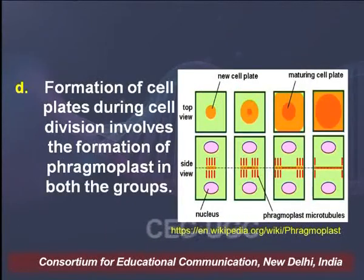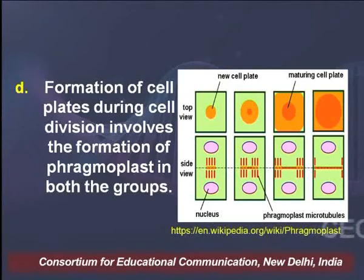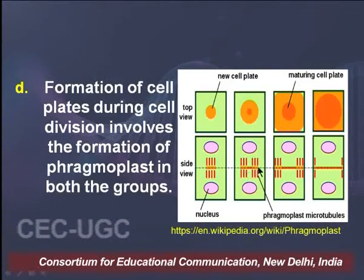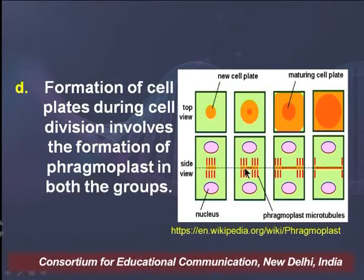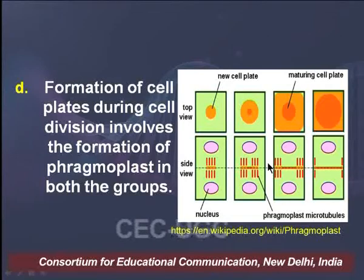The fourth and very important feature common between carophyteens development and land plant development is the formation of cell plates during cell division, which involves the formation of phragmoplasts in both groups. Phragmoplasts are tiny structures gradually arranged on the equatorial plate of a cell while the cell undergoes cytokinesis. The pattern of arrangement of phragmoplast microtubules is very similar and almost identical in both carophycine algae and land plants.